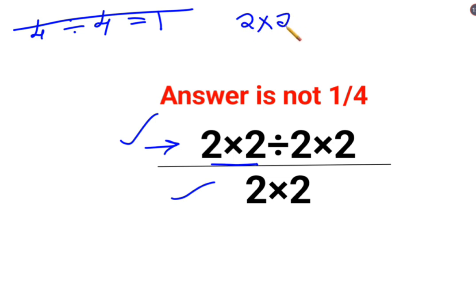When you have something like this with multiplication and division, you just go left to right. Whatever operation happens first on your left hand side has to be done first. So 2 multiplied by 2 is 4, divided by 2 multiplied by 2.